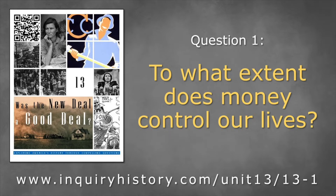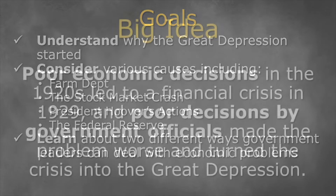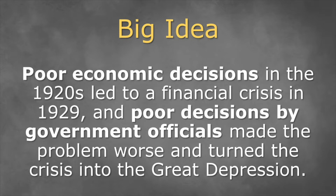Question 1: To what extent does money control our lives? Our goals: We'll understand why the Great Depression started. To do that, we'll consider various causes including farm debt, the stock market crash, President Hoover's actions, and the Federal Reserve. We'll also learn about two different ways government leaders can deal with economic problems. Our Big Idea: Poor economic decisions in the 1920s led to a financial crisis in 1929, and poor decisions by government officials made the problem worse and turned the crisis into the Great Depression.